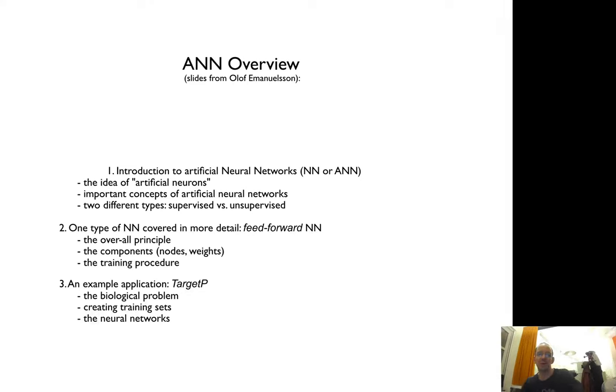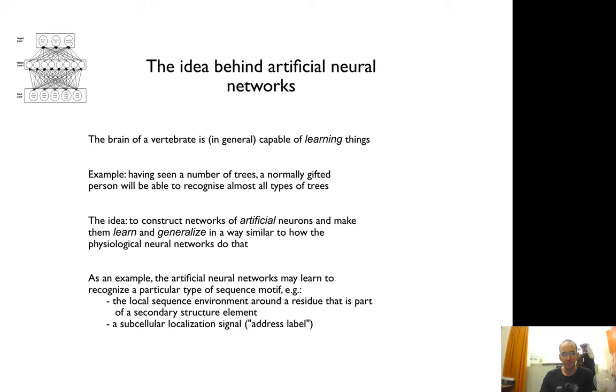The first machine learning method we will go through is artificial neural networks. The slides are taken from Olof Emanuelsson, and we will divide it into first an introduction, then describe one type of neural network called feed-forward neural networks, and then describe an example later.